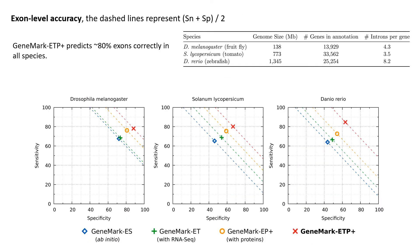Now let's take a look at the results. We evaluated the performance of GeneMark ETP+ on three genomes from different taxonomic phyla and compared the prediction accuracy with three previous versions of the GeneMark algorithm, which utilize only individual sources of evidence. As you can see, GeneMark ETP+ correctly predicts about 80% of all annotated coding exons in each genome.